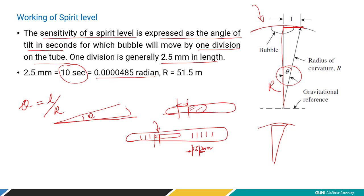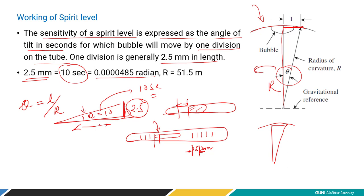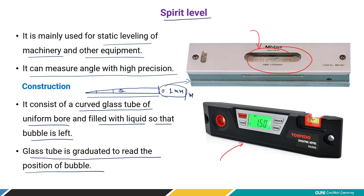This glass tube radius is very high. To have movement of 2.5 mm corresponding to an angle of 10 seconds, if you reverse the triangle by 180 degrees you get the same relationship. For 2.5 mm movement equal to an angle of 10 seconds, the radius that must be kept in the spirit level comes out to be 51.5 meters.